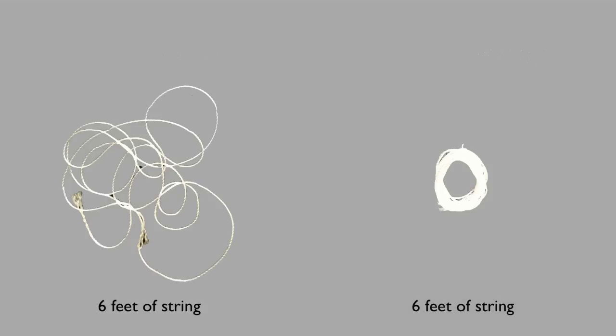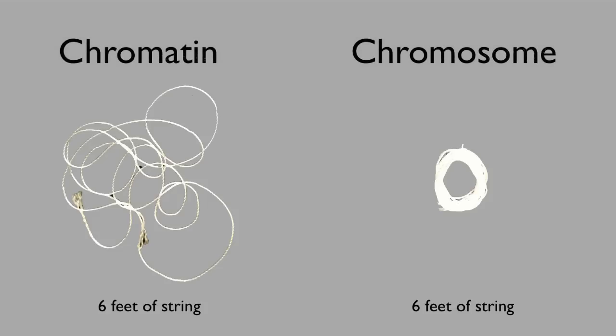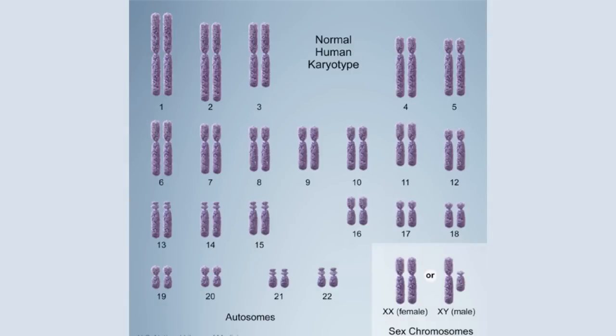I went ahead and got six feet of string, and it's kind of a mess. But if you coil it up, it's actually a lot easier to manage — and this is what cells do with their DNA. When the cell isn't dividing, DNA exists in a loose, uncoiled formation called chromatin. But when the cell is going to be dividing, all of that DNA gets organized into big groups called chromosomes. When we sort them out by size, we call this a karyotype. You can see how the cell organizes all the genomic material so it's easier to manage during cell division.